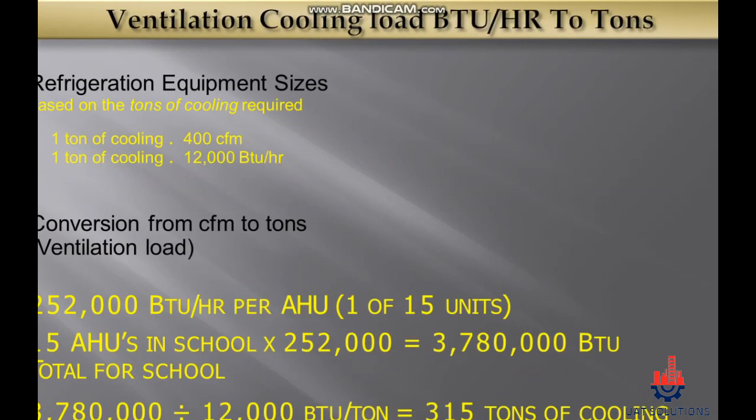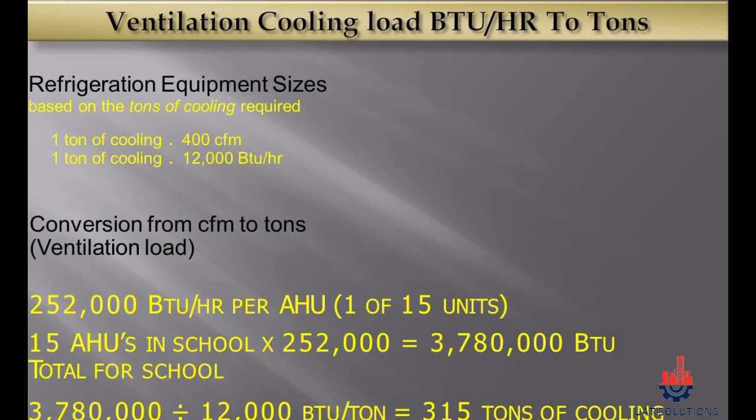Ventilation cooling load for 1 AHU was calculated at 252,000 BTU per hour. With 15 AHUs in the building, total ventilation load is 252,000 multiplied by 15, equaling 3,780,000 BTU per hour. To convert from BTU per hour to tons, divide by 12,000, giving us 315 tons of refrigeration for ventilation cooling only.